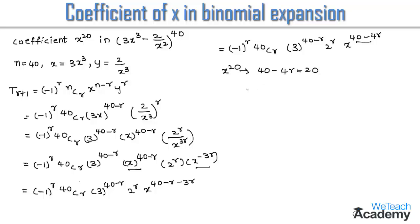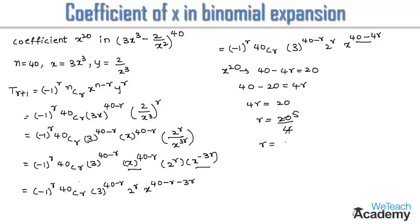Transferring terms, we get 40 minus 20 is equal to 4r, so 4r equals 20. Dividing both sides by 4, we get r is equal to 20 divided by 4, which simplifies to r equals 5.